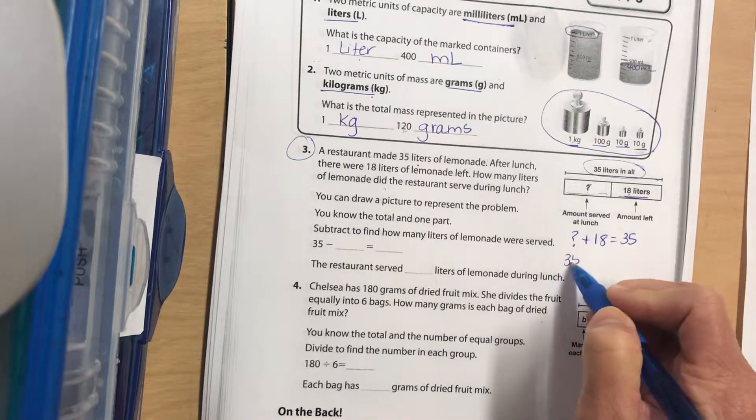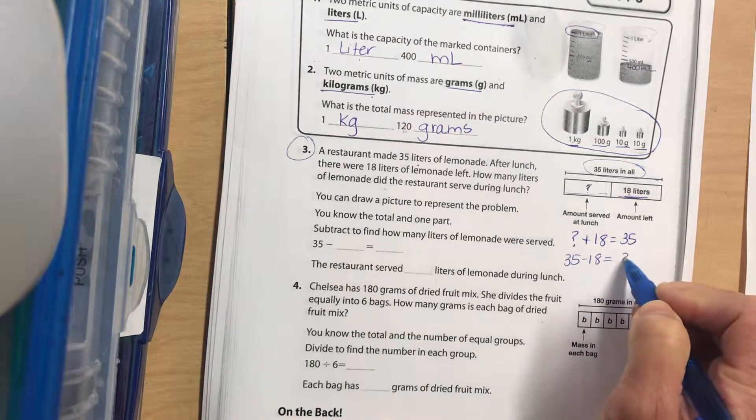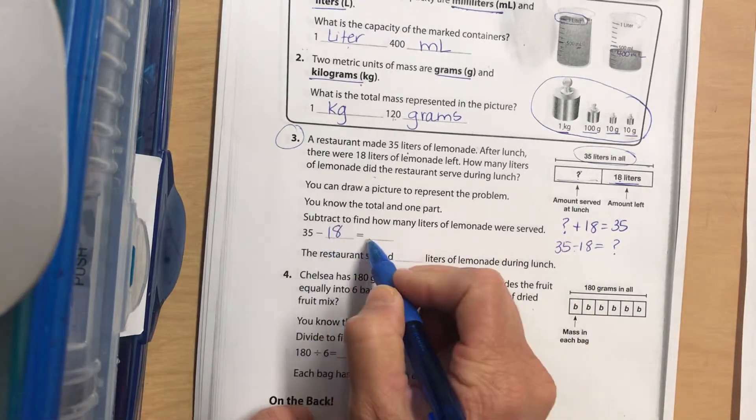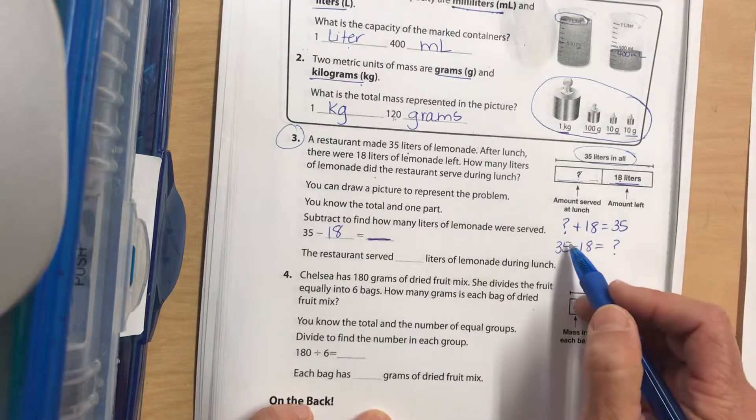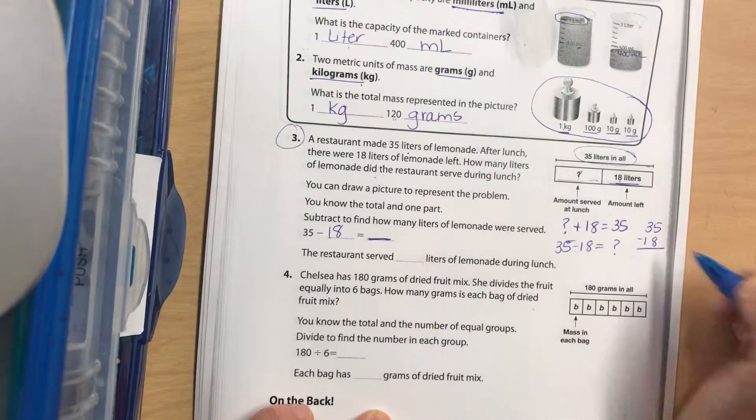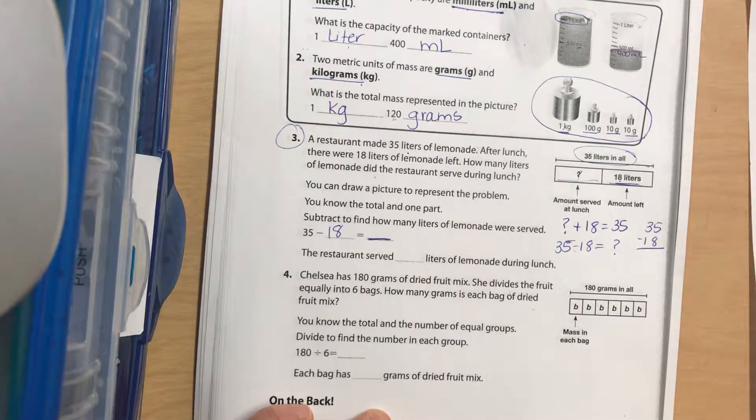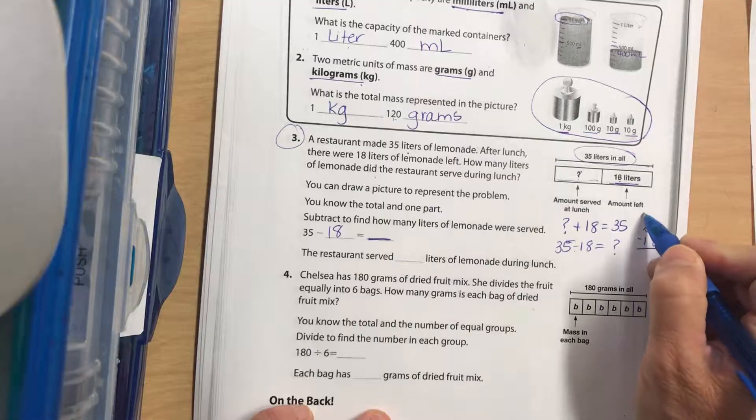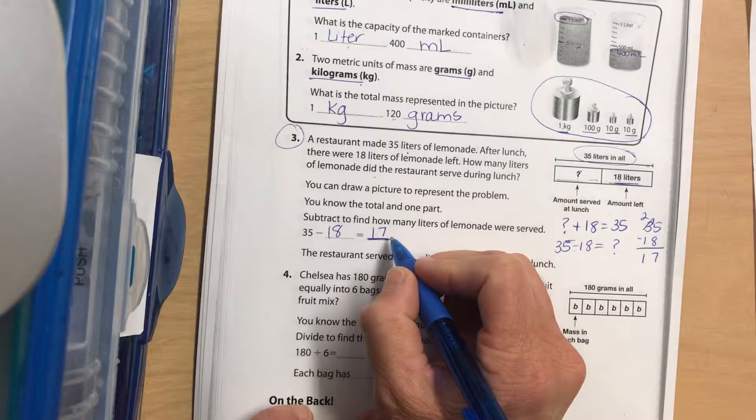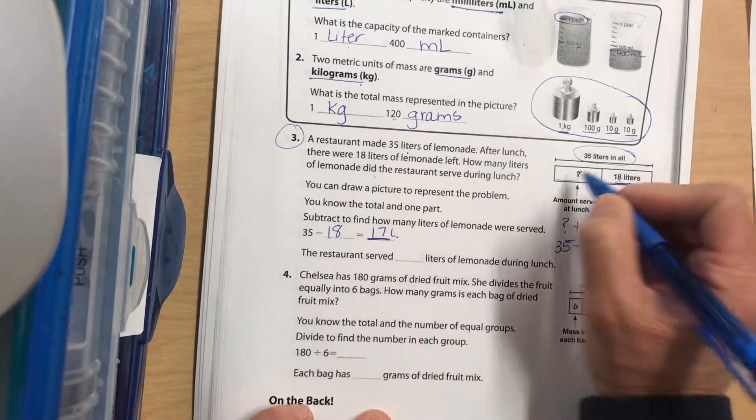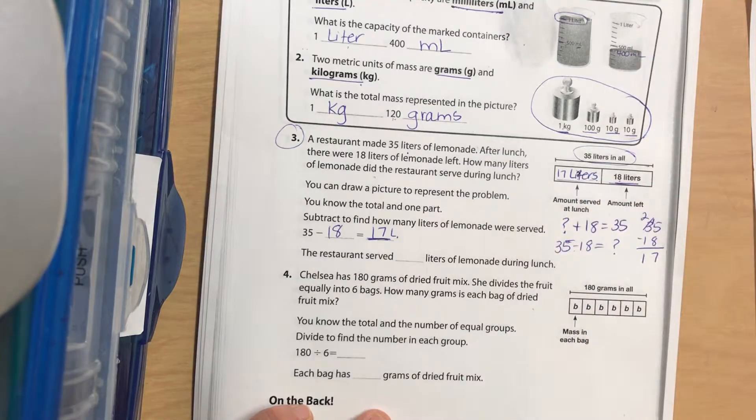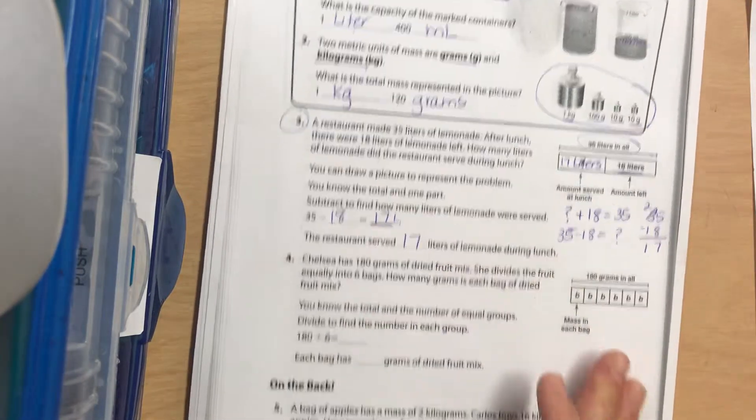We know from our fact family that we can do 35 minus 18. Go ahead and subtract 35 minus 18 and write the answer right there. Pause it. I want you to use subtraction with regrouping, so you need to write it this way. Pause it and do that, then come back. Okay, borrow from the top, so we should have 17 liters. So the restaurant served 17 liters of lemonade during lunch.